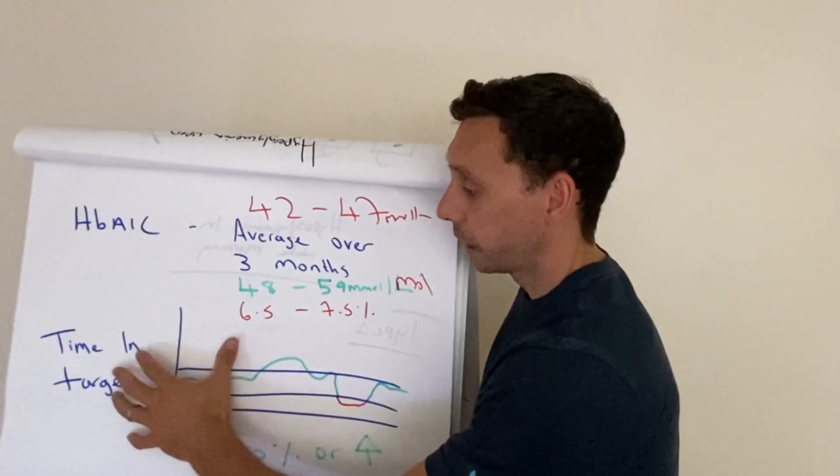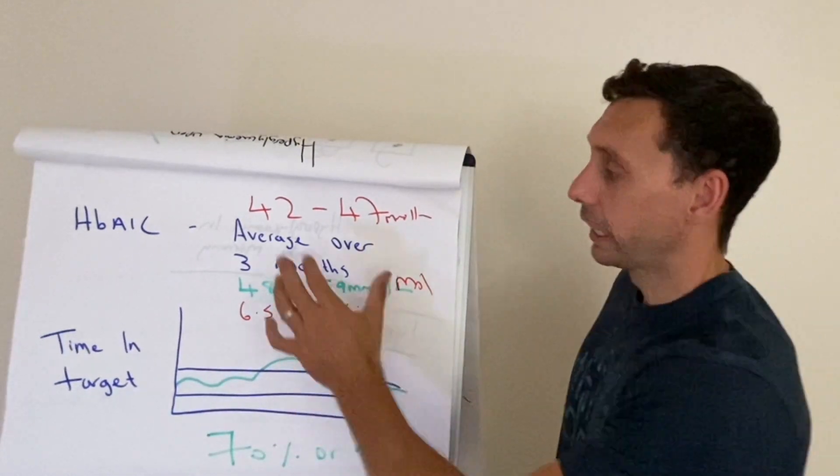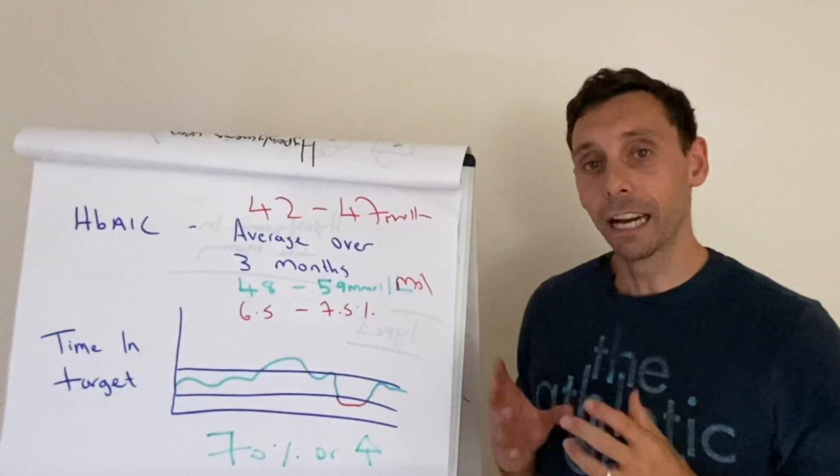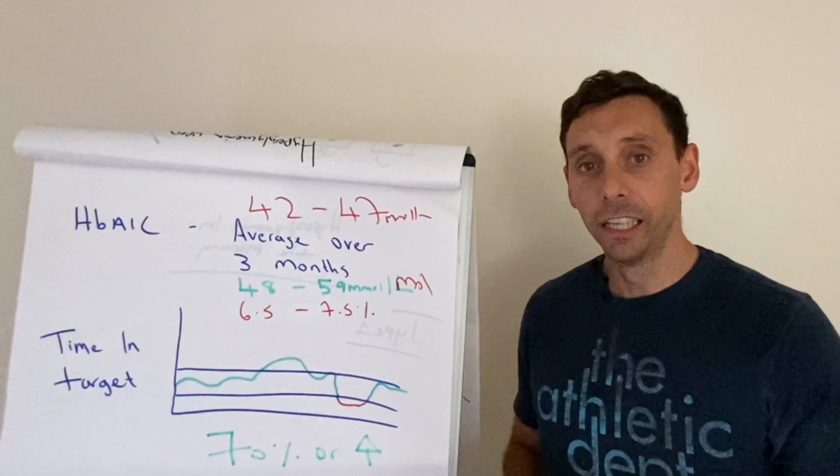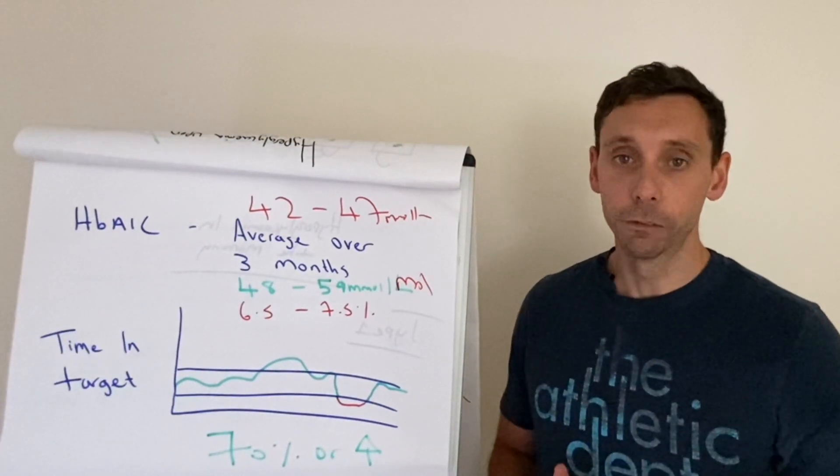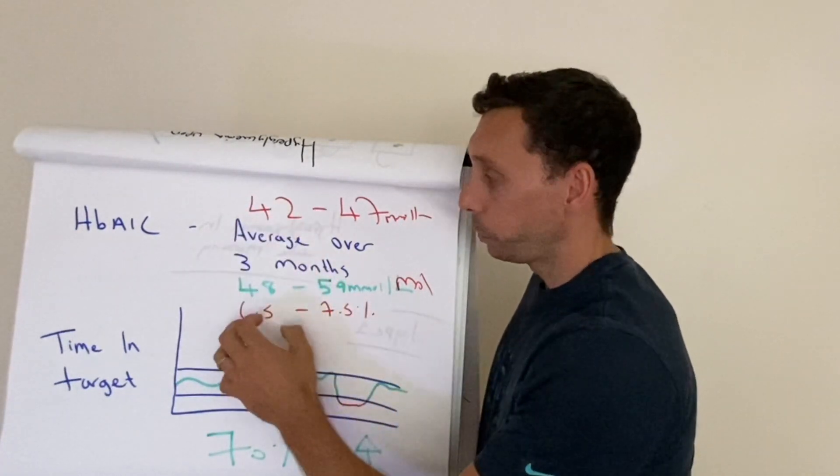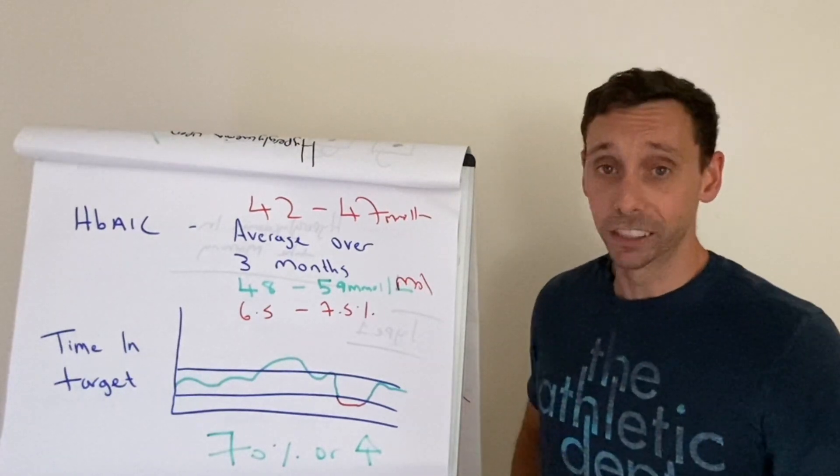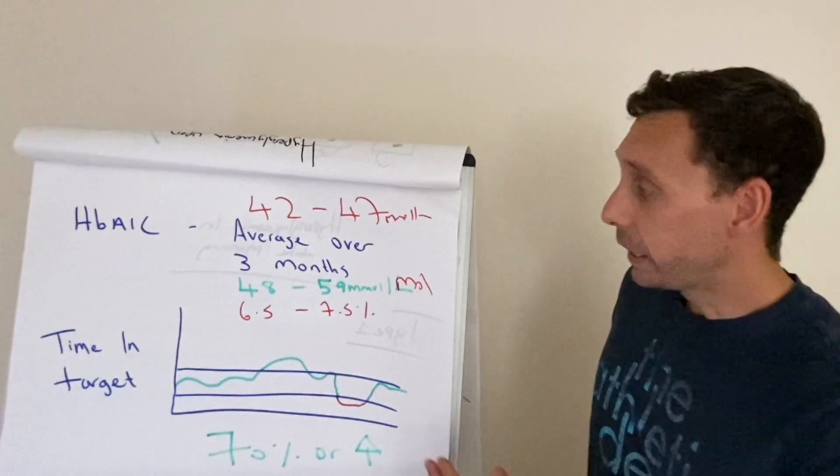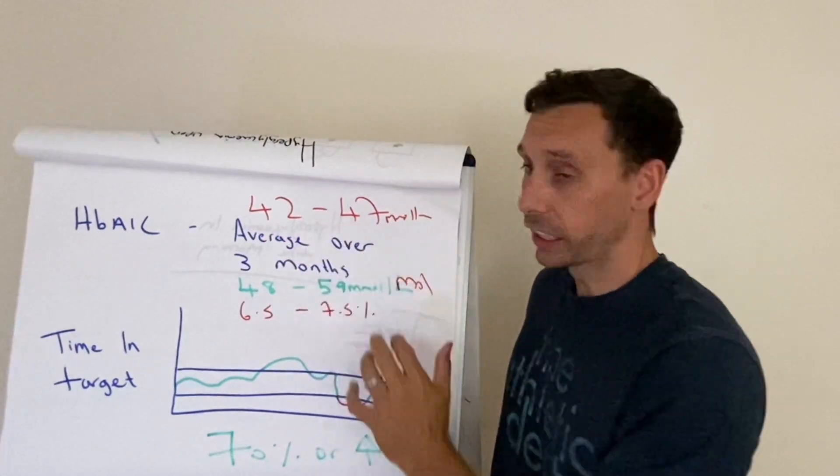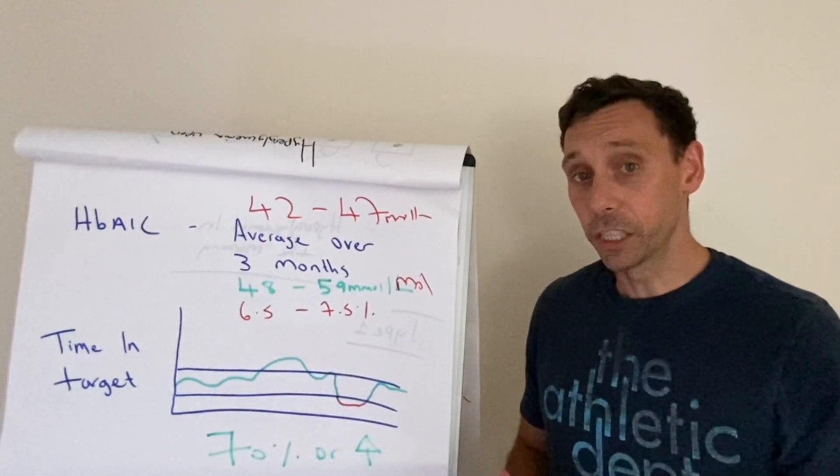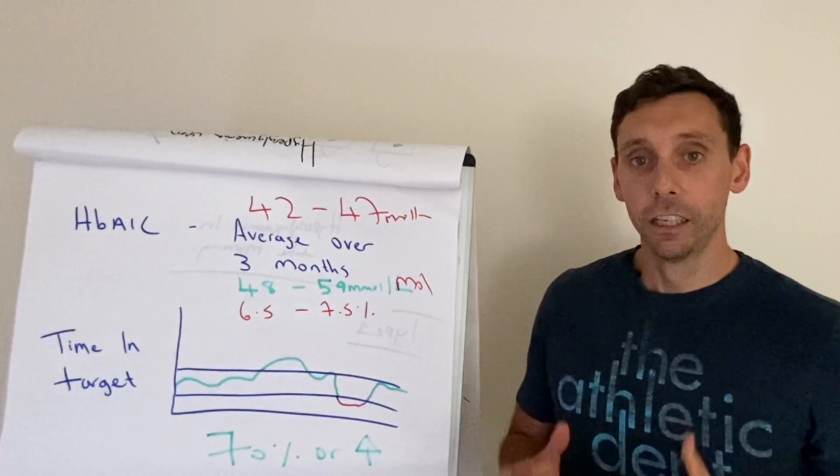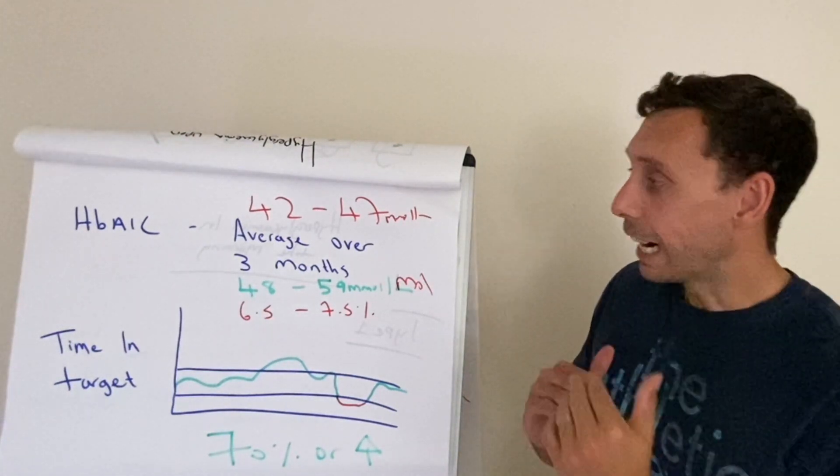Now where time in target is more valuable than HbA1c is remember, HbA1c is an average. So two people could have the same HbA1c despite having different glucose levels day to day. So someone could be between 2 and 20, just bouncing up and down with their glucose levels all day, but still appear to have a normal HbA1c. Whereas another patient could have the same HbA1c, but have perfect glucose levels running between 5 and 9. So you can really see how the average can be skewed.